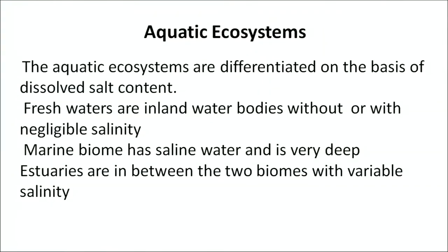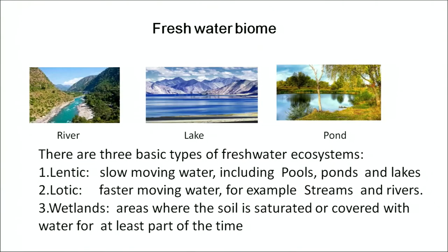Freshwaters are inland water bodies with no or negligible salinity. The marine biome has saline water and is very deep. Estuaries are in between the two biomes with variable salinity. There are three basic types of freshwater ecosystems: lentic — slow moving water bodies including pools, ponds and lakes; lotic — fast moving water bodies such as streams and rivers; and wetland areas where the soil is saturated with water or covered with water for at least part of the year. The picture shows an aquatic ecosystem of freshwater with various components of fauna and flora influenced by the region in which it exists.